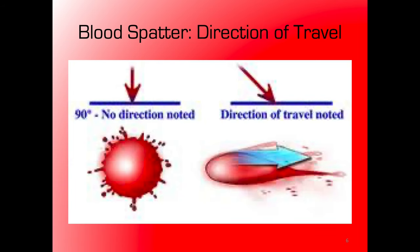At a 90-degree angle, you get a pretty circular droplet with some spikes, spines, and satellites. Blood coming in at less than 90 degrees produces a more elongated, oval-shaped droplet — the lower the angle, the more stretched it becomes. Straight down gives a circular drop; significantly less than 90 degrees gives a very elongated drop. The darker, thicker end is always towards the tail — that's the direction blood was traveling.